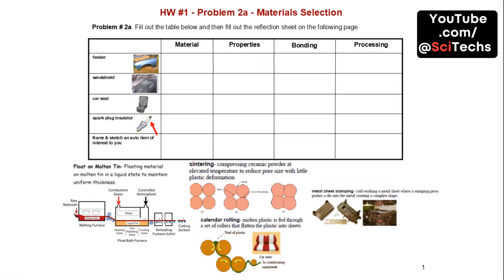For homework, fill out the table with material properties, bonding, and processing methods. Reflect on your choices and sketch an auto component, explaining the criteria used for selection.